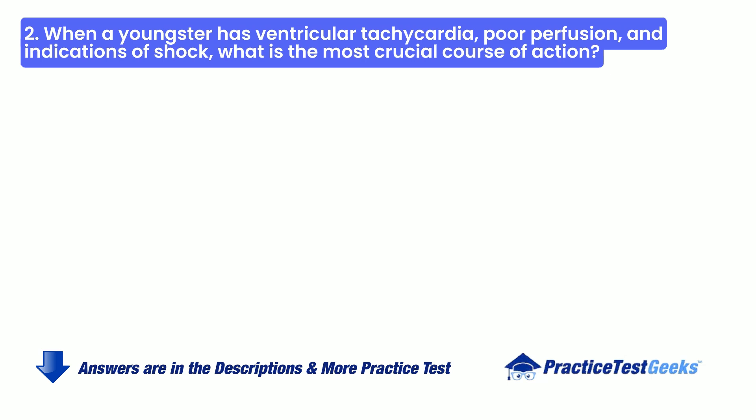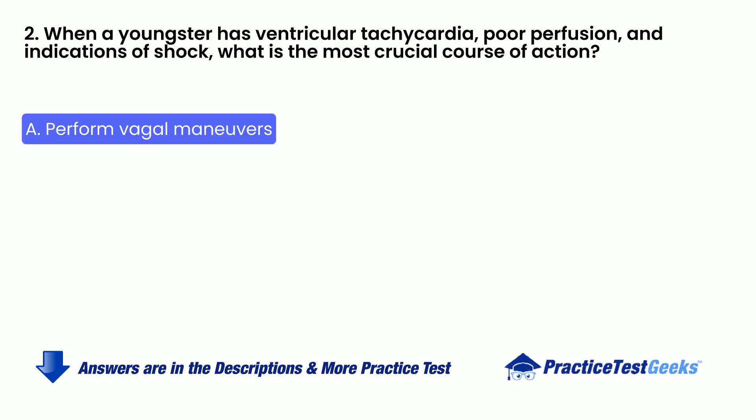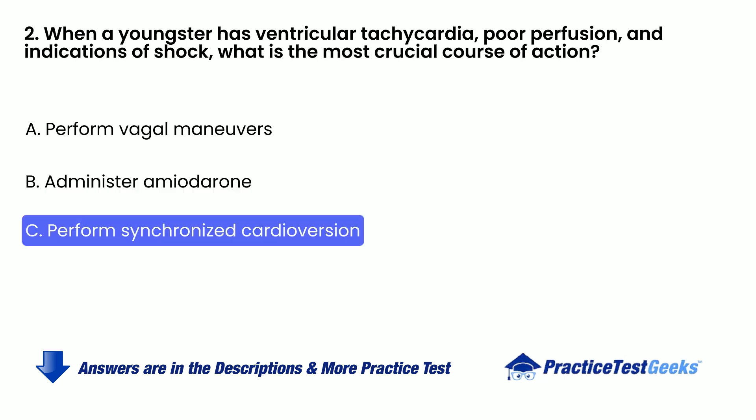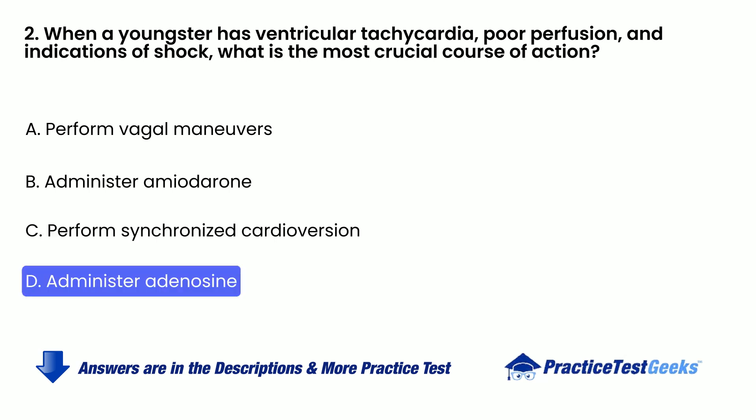When a youngster has ventricular tachycardia, poor perfusion, and indications of shock, what is the most crucial course of action? A. Perform vagal maneuvers. B. Administer amiodarone. C. Perform synchronized cardioversion. D. Administer adenosine.